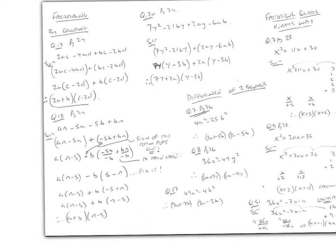Let's look at factorising by grouping. For 2ac-4ad+bc-2bd: put brackets around the first two terms and the second two terms. The highest common factor of the first pair is 2a, giving 2a(c-2d). The highest common factor of the second pair is b, giving +b(c-2d). The standout term is (c-2d), so the answer is (c-2d)(2a+b).